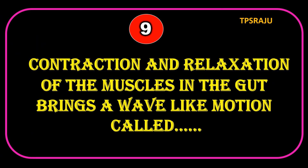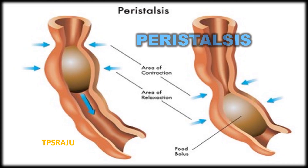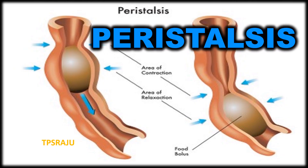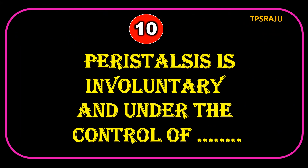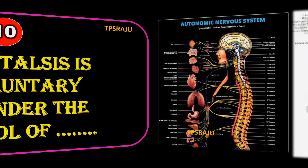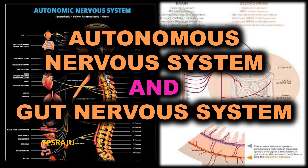Contraction and relaxation of the muscles in the gut brings a wave-like motion called peristalsis. Peristalsis is involuntary and under the control of the nervous system — autonomous nervous system and gut nervous system.